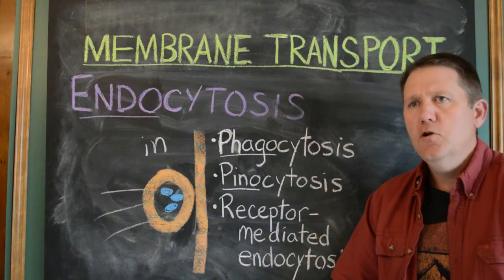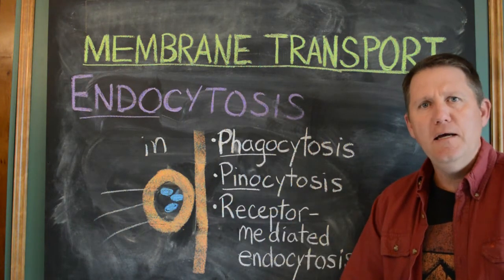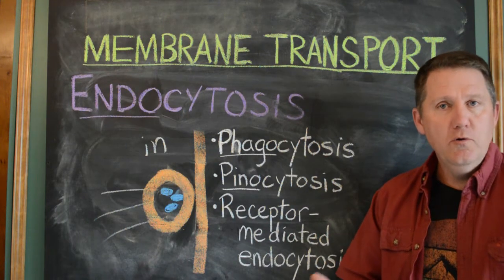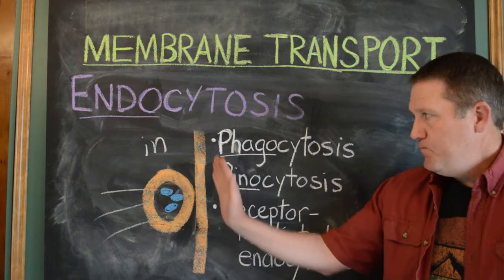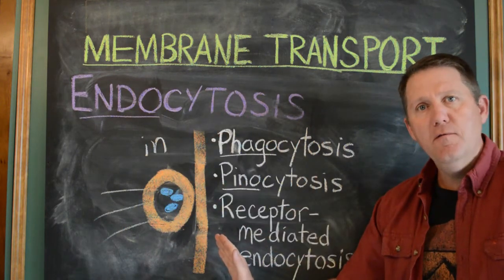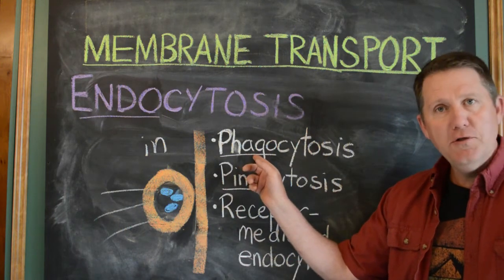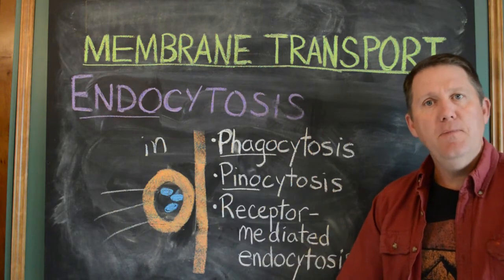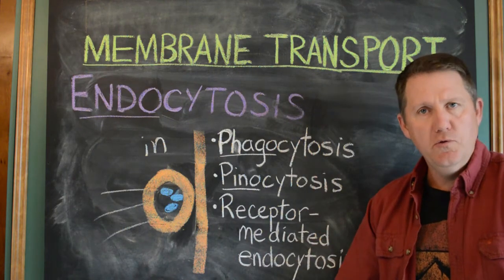Can plants do endocytosis too? That's a good question — you wouldn't think plants could, but it's only recently become apparent that they actually do. Since they have a cell wall outside their membrane, they can't do phagocytosis because they can't reach out. But they can do pinocytosis and receptor-mediated endocytosis, which is important in many of their processes, especially bringing nutrients into the roots.